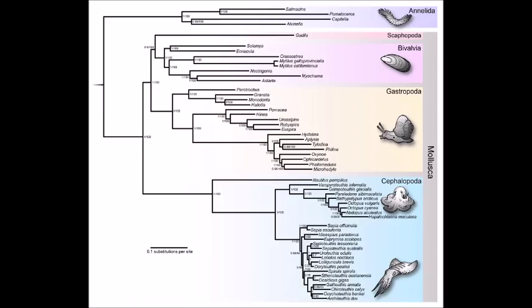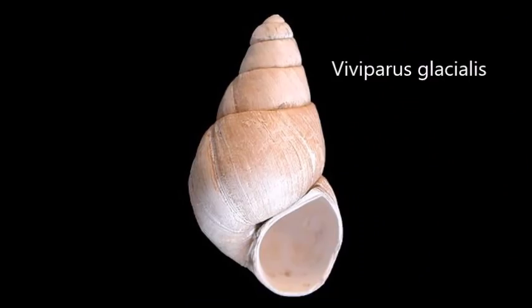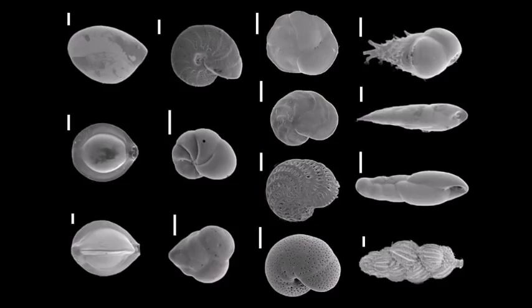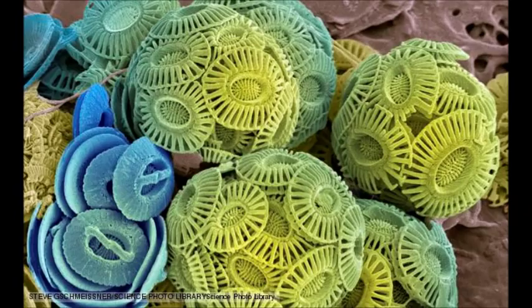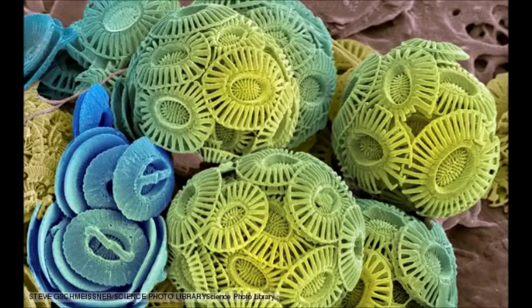Closely related to cephalopods are gastropods, and some of these have been used as index fossils as well. Viviparus glacialis dates to a Pleistocene interglacial period called the Tiglian, which occurred 500,000 years ago. Foraminiferans, diatoms, radiolarians, and coccolithophores similarly leave remains that make great index fossils.